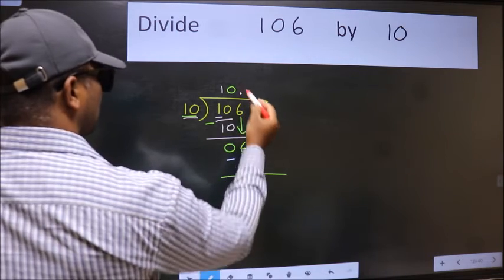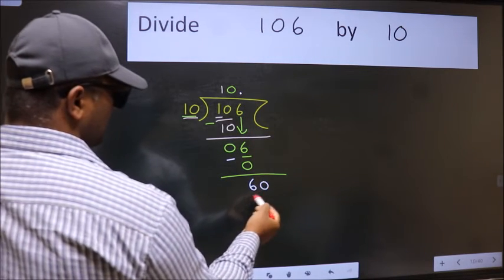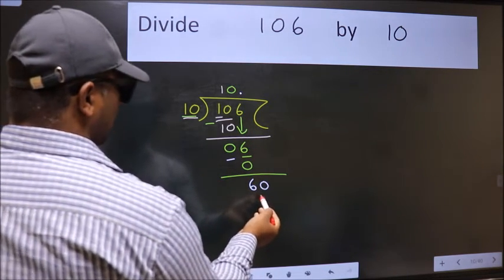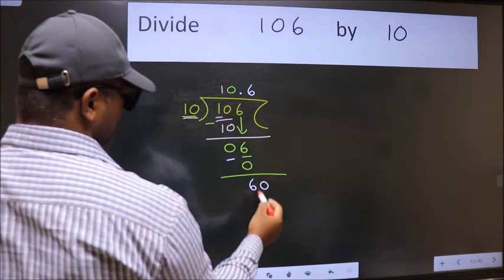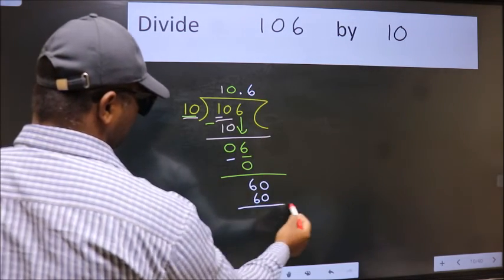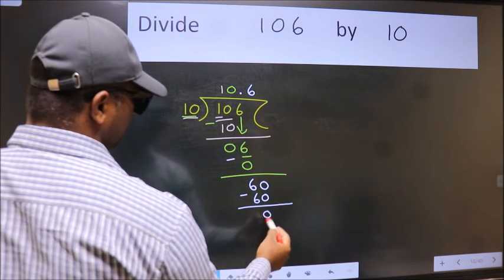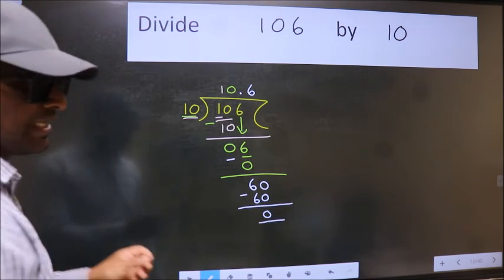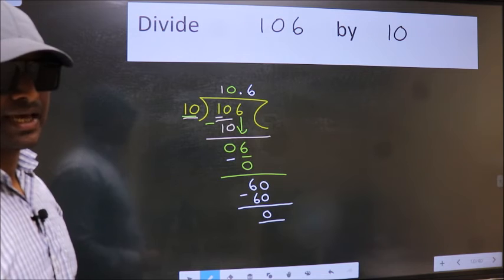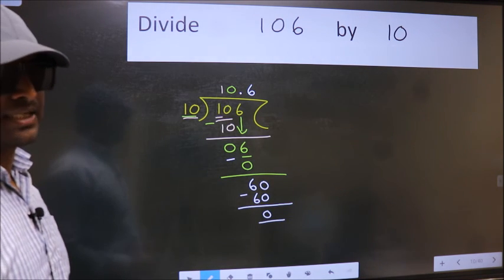So now we can put dot and take 0. So 60. When do we get 60 in 10 table? 10, 6, 60. Now we subtract, we get 0. Did you understand where does the mistake happen? You should not do that mistake.